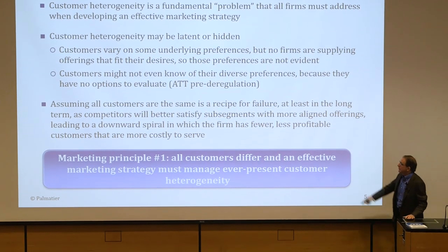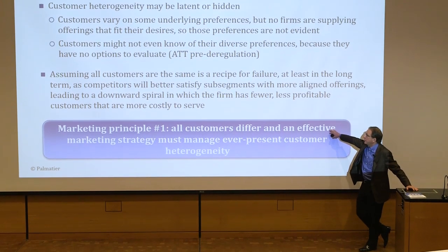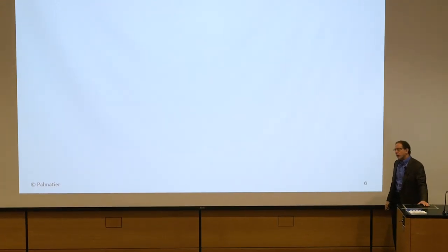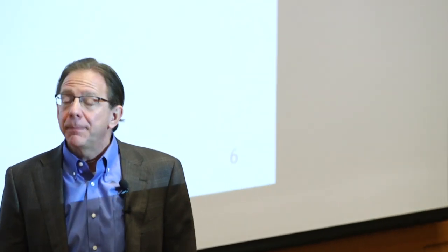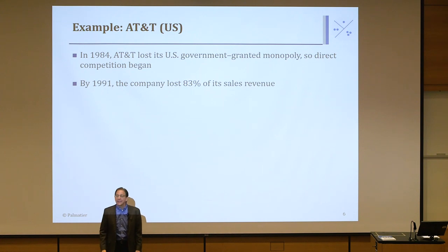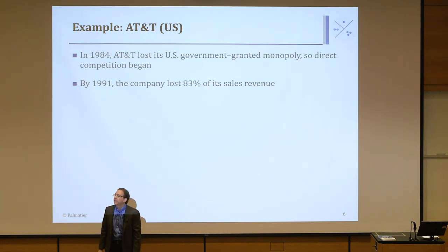Marketing principle one: all customers differ, and an effective marketing strategy must manage the ever-present customer heterogeneity. AT&T had a monopoly and sold all phones in the U.S. But in 1984, the U.S. government removed their monopoly power and introduced competition. At that point, people did not understand the level of heterogeneity in the market regarding phone service. By 1991 — just seven years later — the company had lost 83% of its sales revenue.